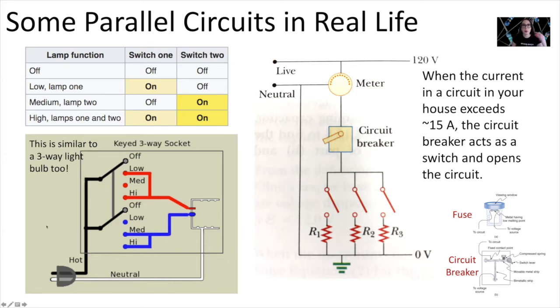Here are some examples of parallel circuits in our real life. One great example is a three-way light switch. Here's kind of a schematic of the inside of a three-way light bulb. There are three different options to choose from for the way in which switches operate inside the three-way light bulb.